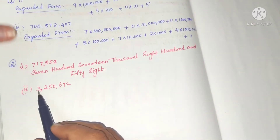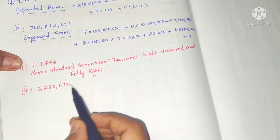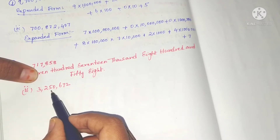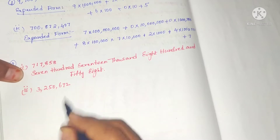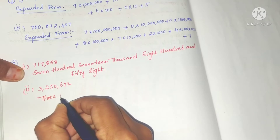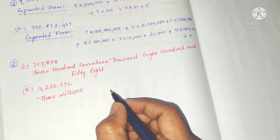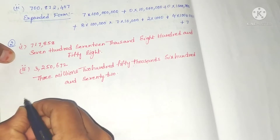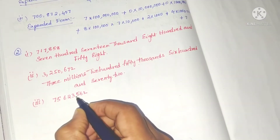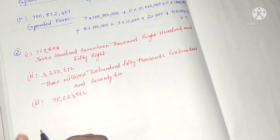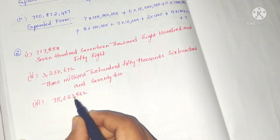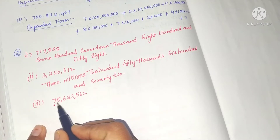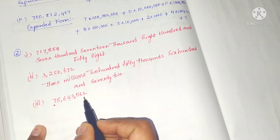The second number is 3,250,672. We place commas after three digits. So the periods are: ones period, thousands period, and millions period. In the international system the third number is 75,623,562.